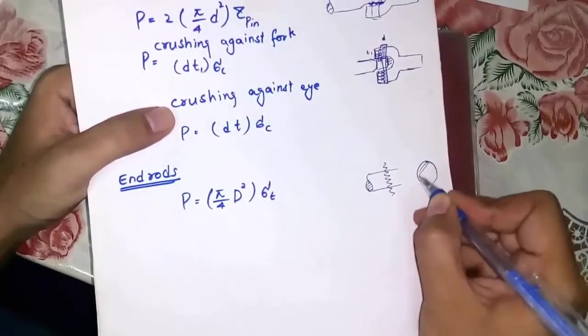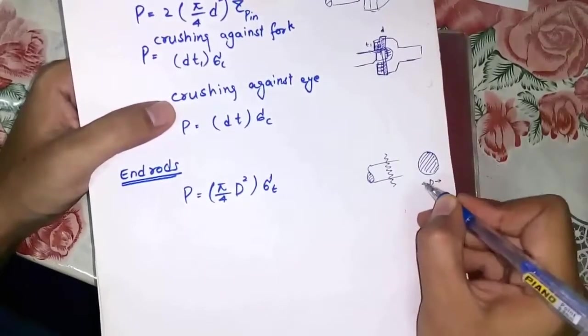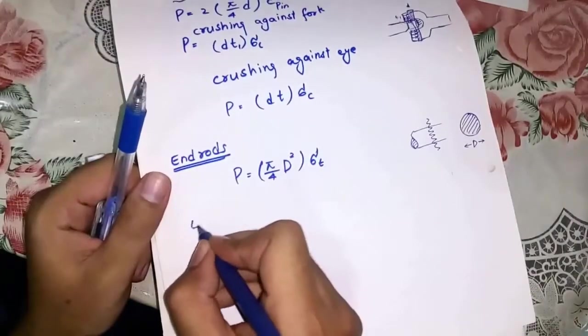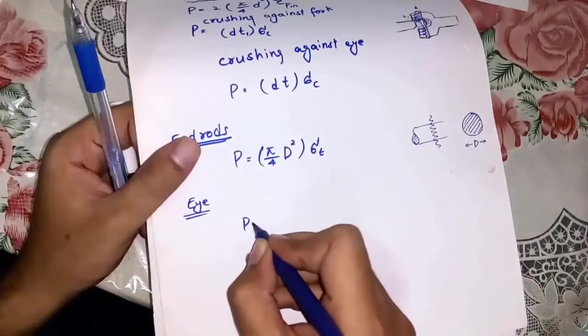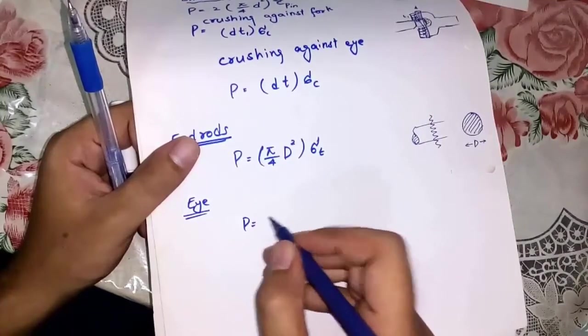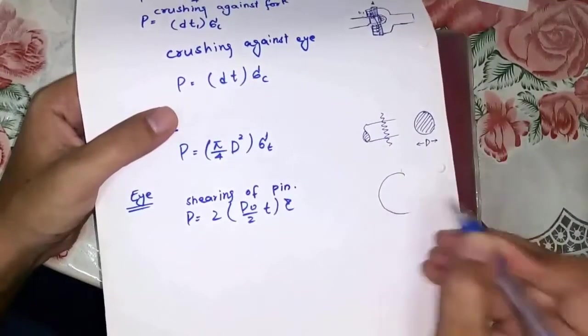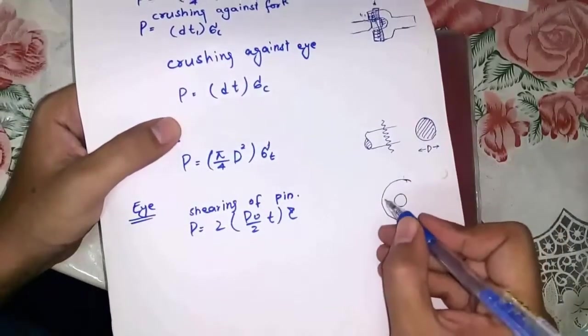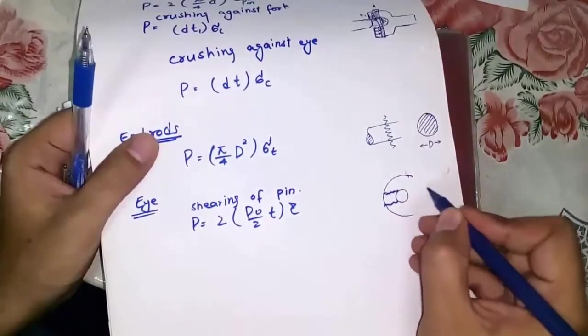Circular cross-section area into stress. Next part is eye. Eye - it is the diameter of eye and this is hole for pin. It may shear like this. If we turn this part, we would see...